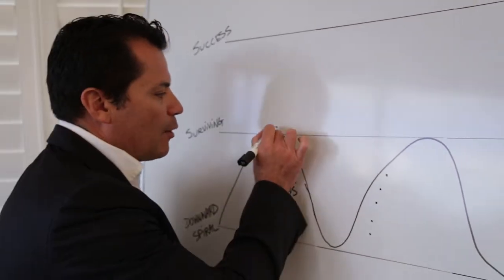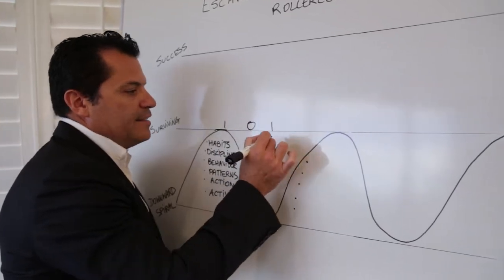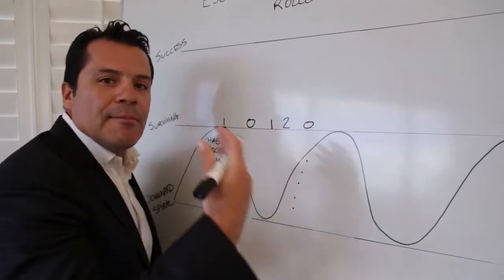Survival for some agents sometimes looks like one listing, zero, one listing, two, zero, on a month by month basis.